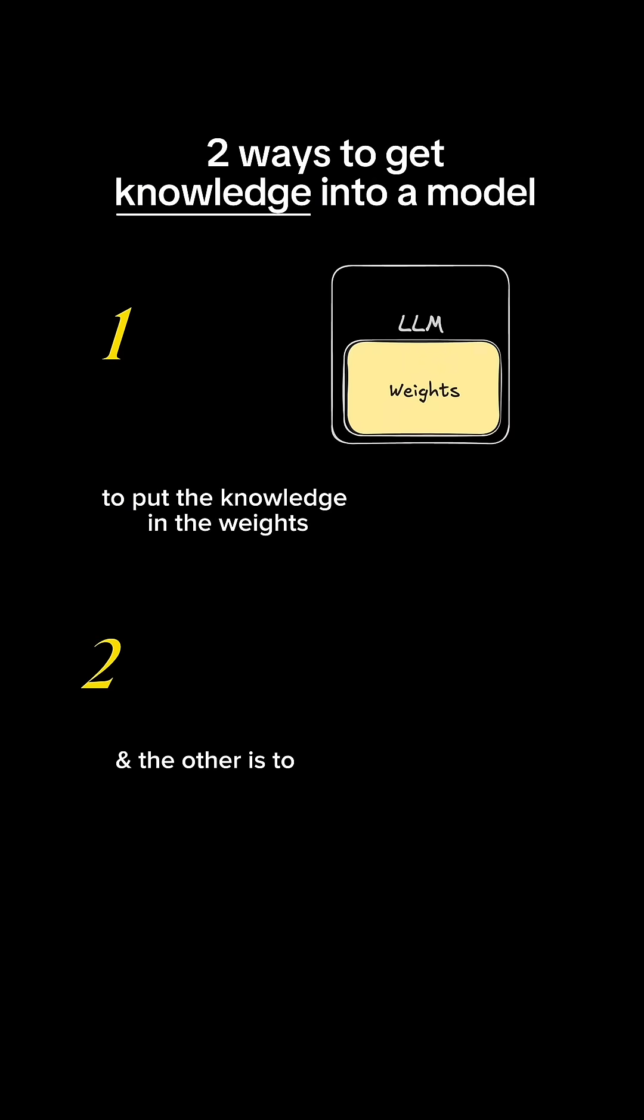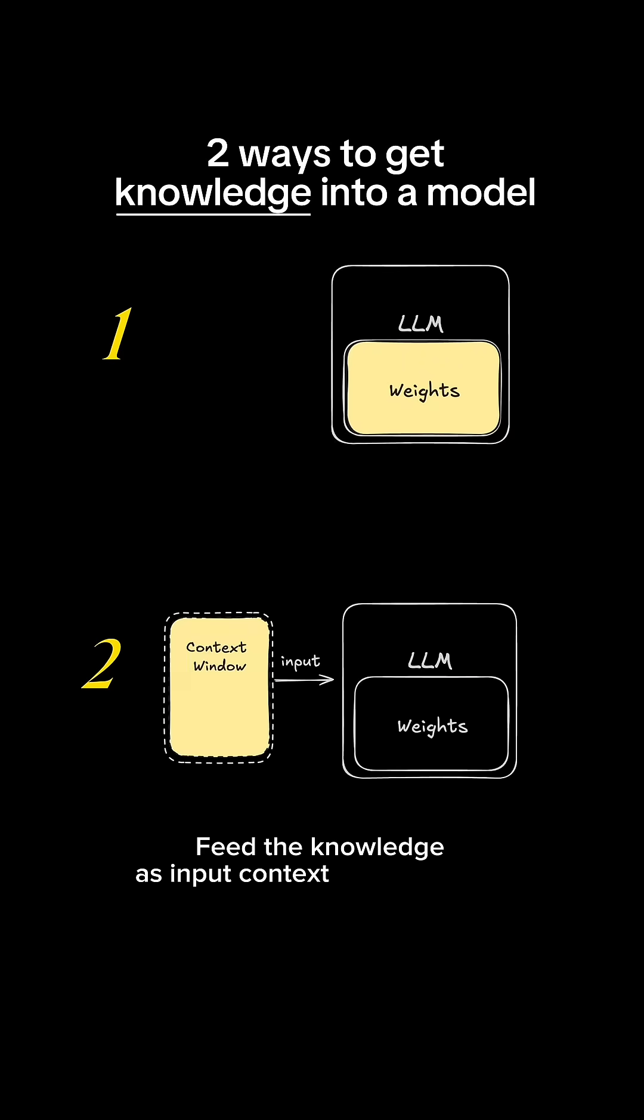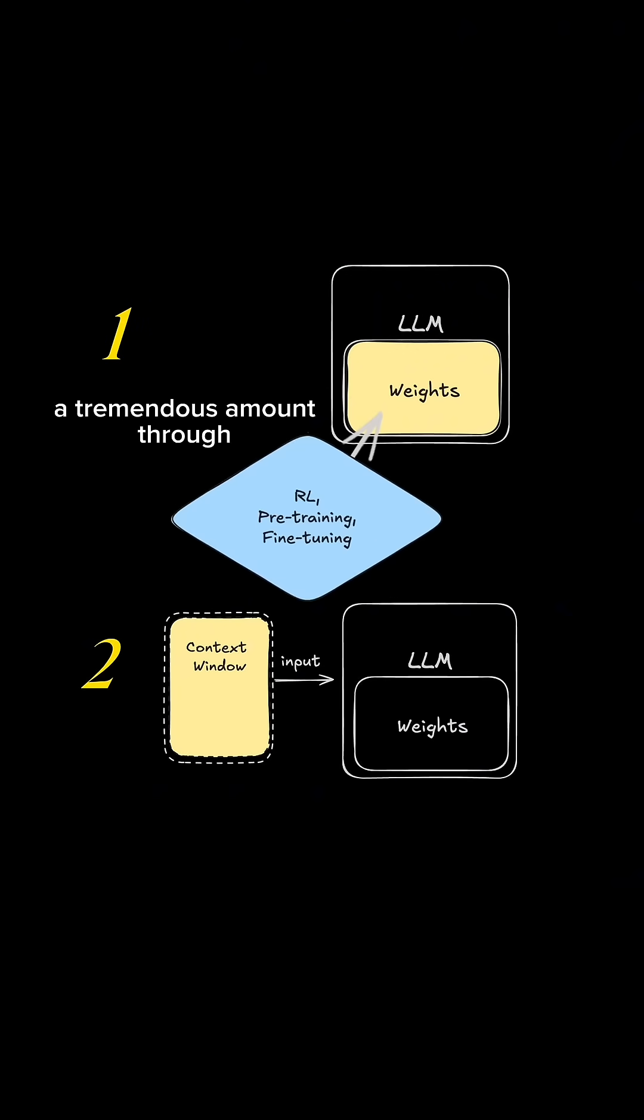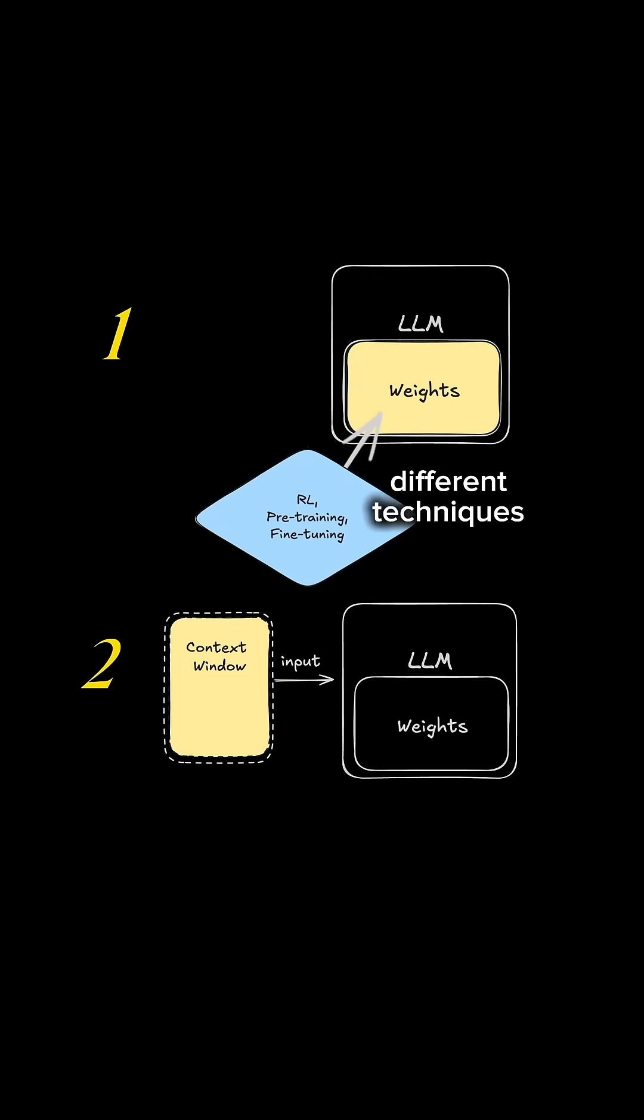One is to put knowledge in the weights and the other is to feed the knowledge as input context into the model. We've done a tremendous amount through reinforcement learning, pre-training, and fine-tuning to figure out different techniques for getting knowledge into the weights of a model.